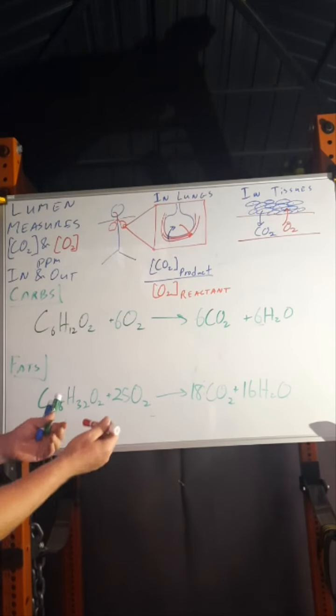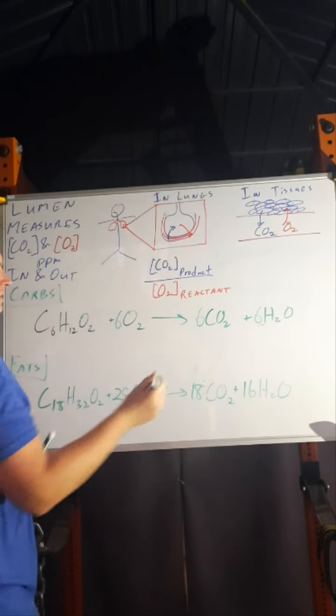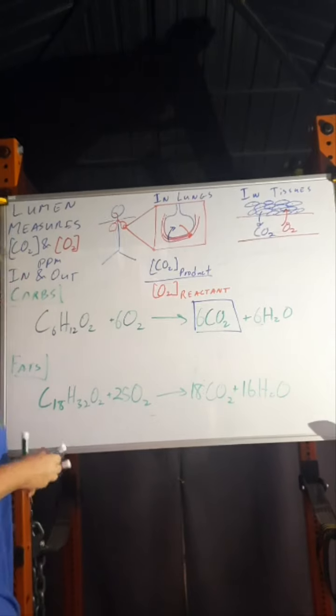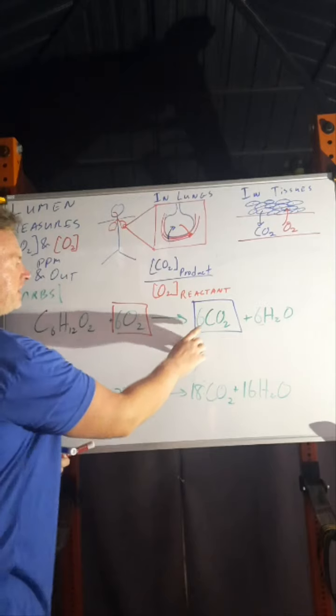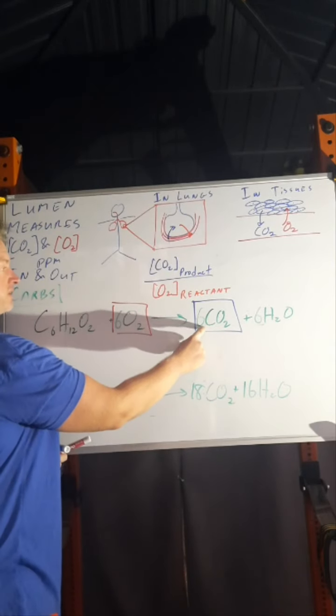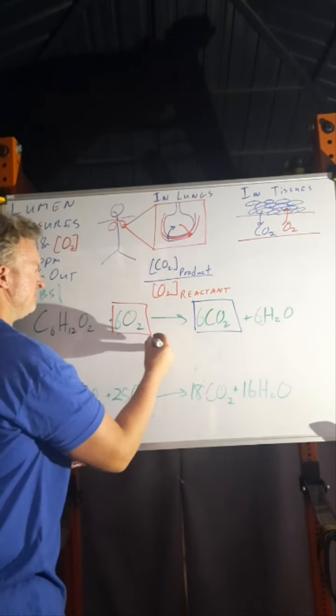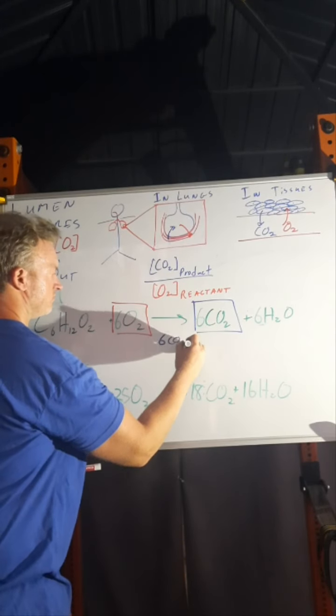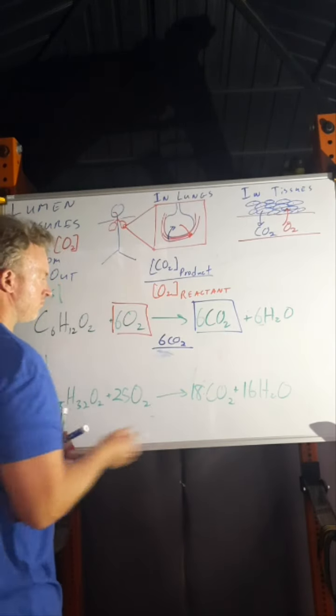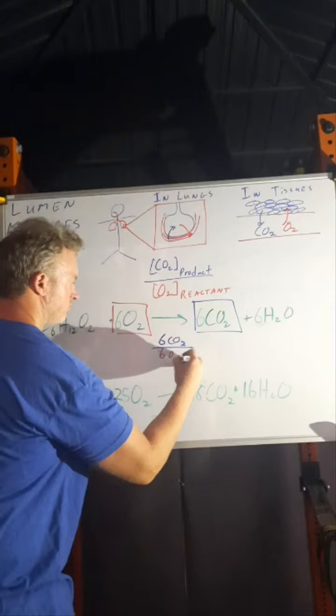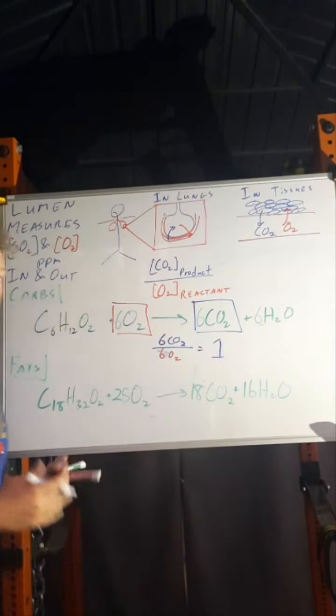The carbohydrate: the CO2 that is the product and the O2 that is the reactant for carbohydrates is—I can do this math in my head—six divided by six. This ratio is one.